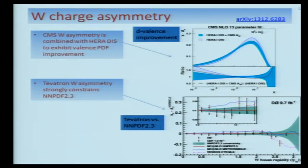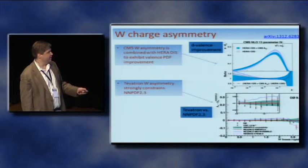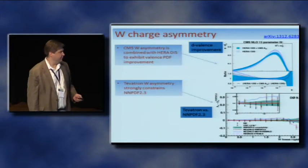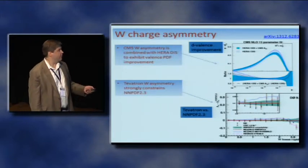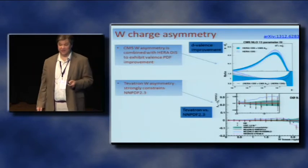To see how this affects PDFs, CMS combined their W asymmetry measurement with HERA deep inelastic scattering data, and at very low x, they see quite a bit of improvement in the d-valence quark PDF. Similarly, the Tevatron compared their W asymmetry constraints with one of the latest PDFs — PDF 2.3, which includes some LHC data — and with their very small error bars, they are going to make a big improvement. Hopefully these improvements will set the stage for more precise electroweak measurements in both the W and Z sectors.